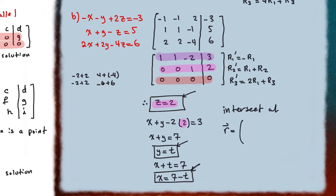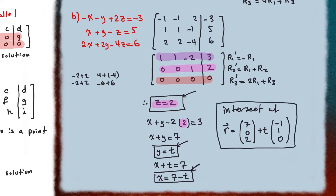We can also write this in vector form. The initial point has x equal to seven, y equal to zero, and z equal to two. The direction vector has coefficients of t: negative one for x, one for y, and zero for z.